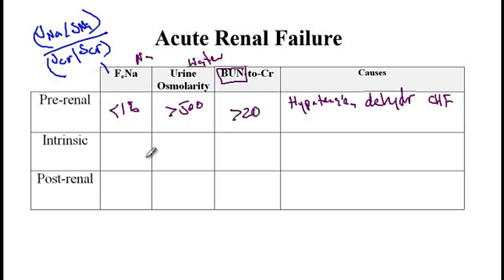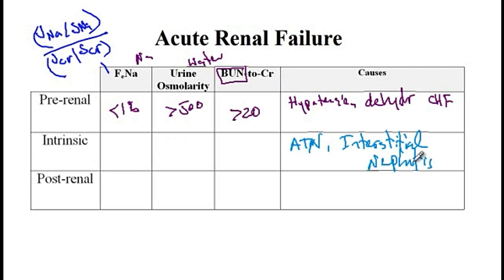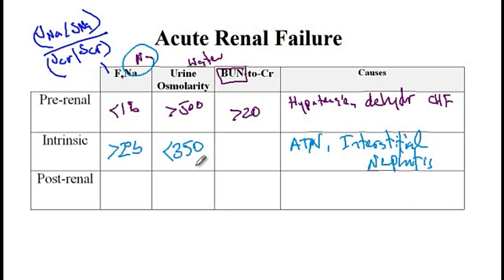Intrinsic renal failure is seen with acute tubular necrosis or interstitial nephritis, caused by drugs like NSAIDs. Since there is kidney damage, there is decreased reabsorption of sodium, so fractional excretion of sodium is more than 2%, urine osmolarity is less than 350 because the kidneys can no longer reabsorb water, and BUN cannot be reabsorbed either, so the BUN to creatinine ratio is less than 15.